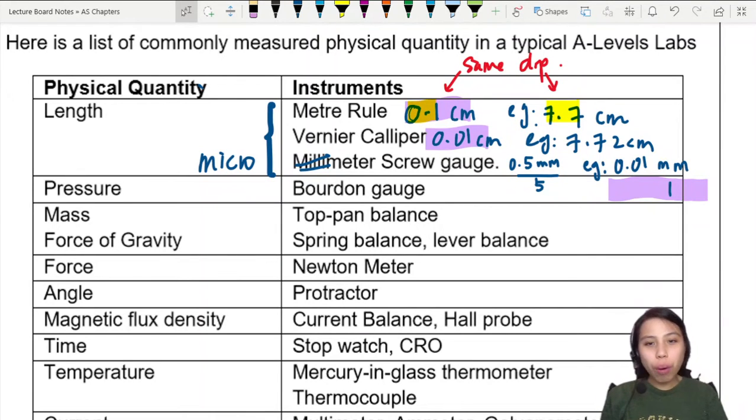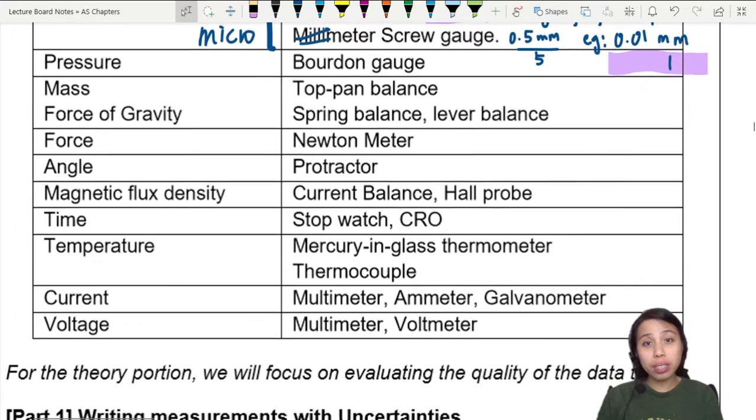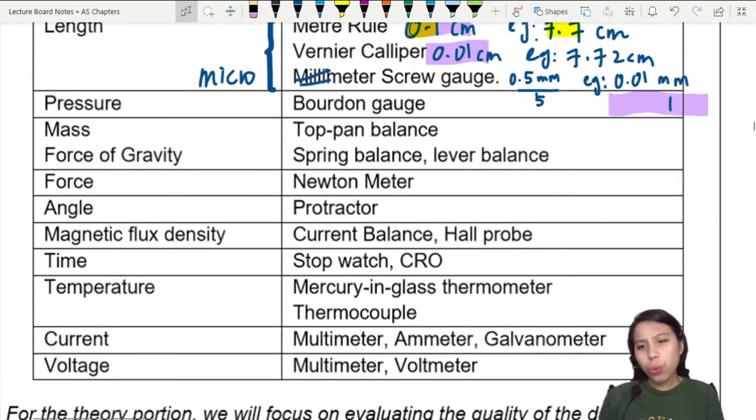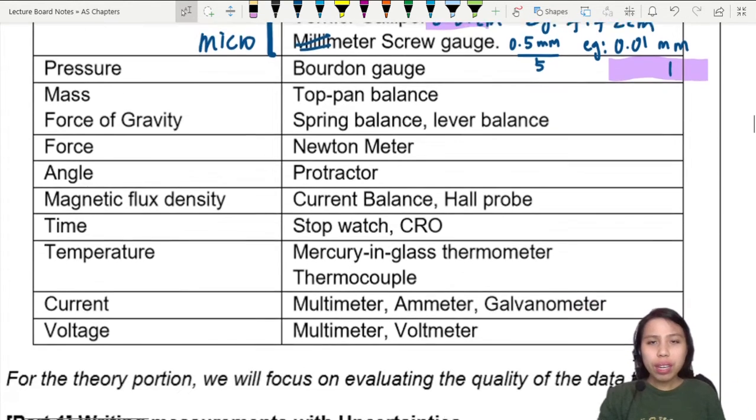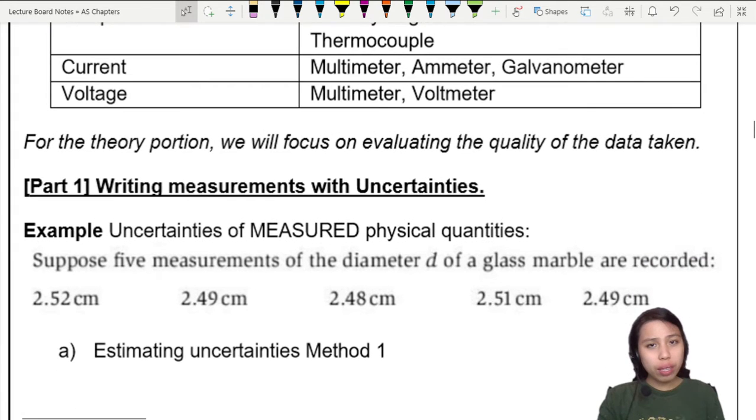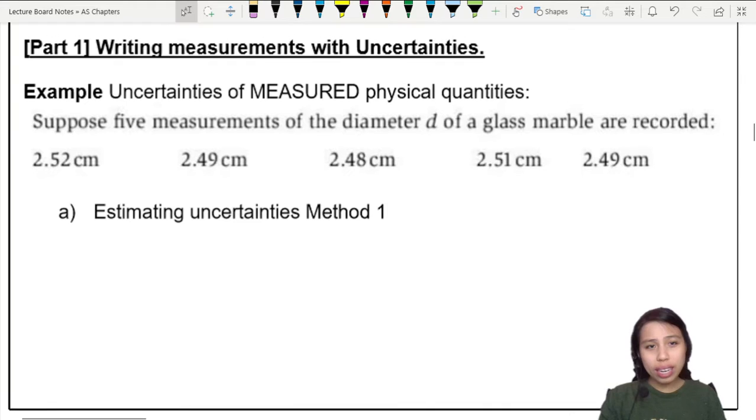Previously, we looked at a nice list of all the instruments that you could be using in A-levels to measure different kinds of quantities. Now we want to look at, what if you took one of these instruments and you measured something? You are not very certain of that quantity, but how do you find or estimate the uncertainty? That's what we're going to look at in this part.